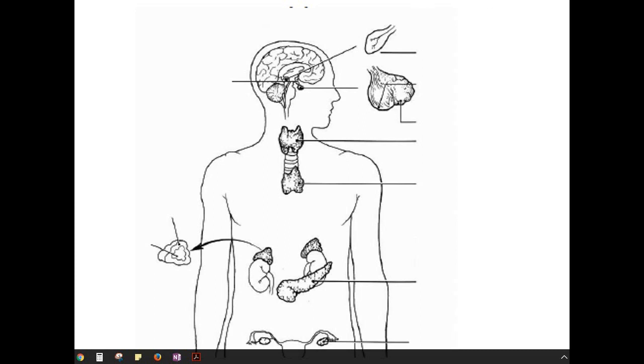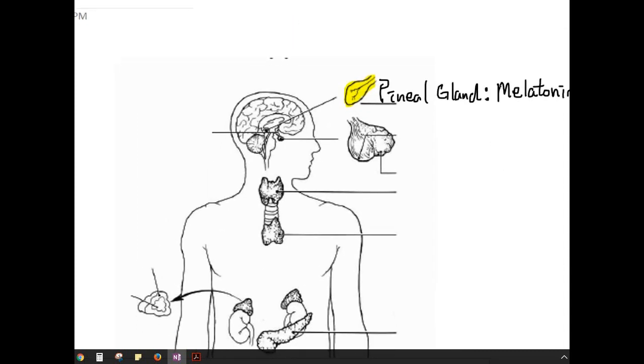Let's begin with this one at the top, that is located at the back of the brain, and this is the pineal gland. And as you remember, the pineal gland secretes a hormone called melatonin, and melatonin is going to help you go to sleep, basically.